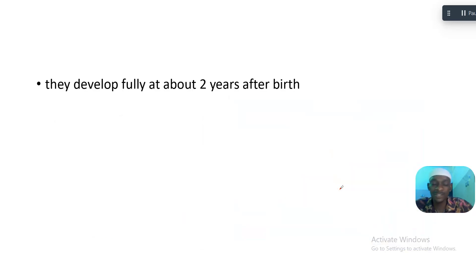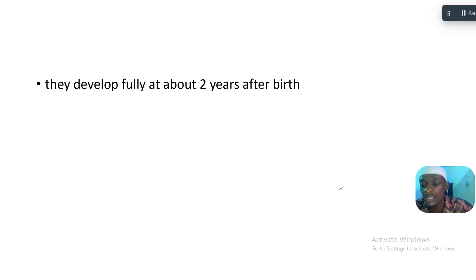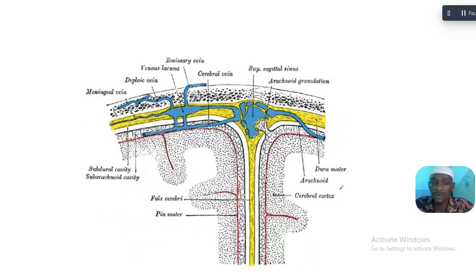The diploic veins develop fully at about two years after birth. They are not fully developed in fetuses — full development occurs around two years postnatally.